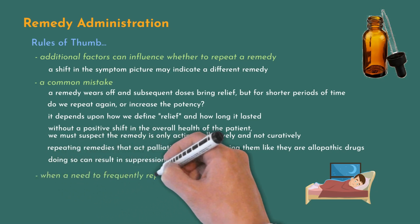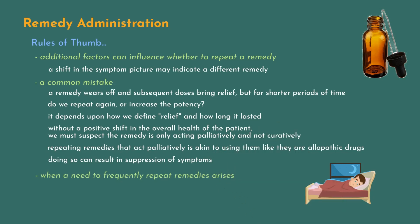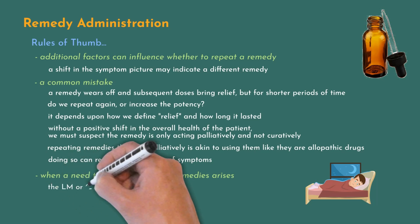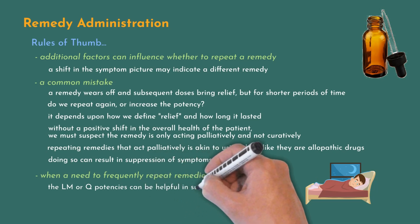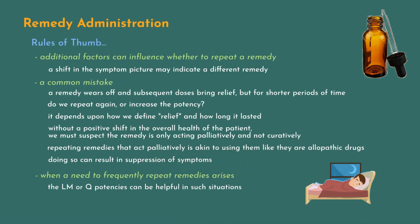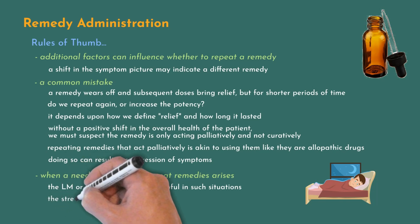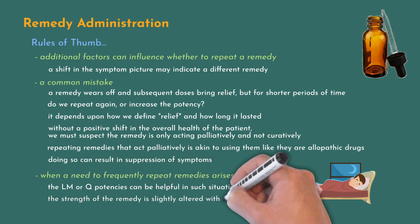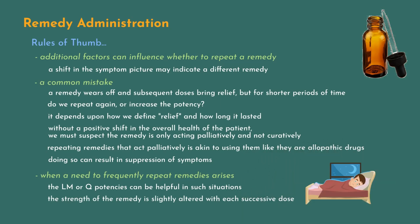Sometimes it's advisable to repeat remedies on a regular basis in order to produce a slow, gentle, and gradual healing response. This is particularly desirable when dealing with organic pathology or with individuals who are in fragile, weakened states of health. The LM or Q potencies may be particularly helpful in such situations. The key difference in this potency scale is that the strength of the remedy is slightly altered with each successive dose. Properly done, this method requires more patient education and professional supervision.